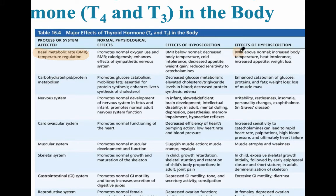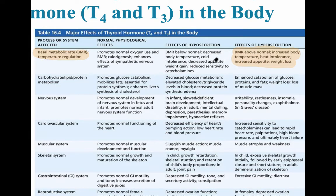For metabolism in hyperthyroidism, the basal metabolic rate is above normal. This increases body temperature, heat intolerance, increased appetite, and weight loss. Hypothyroidism is the extreme opposite of this.